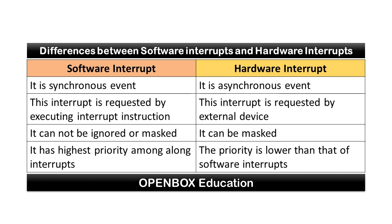Software interrupt has the highest priority among all interrupts. Hardware interrupt priority is lower than that of software interrupts.